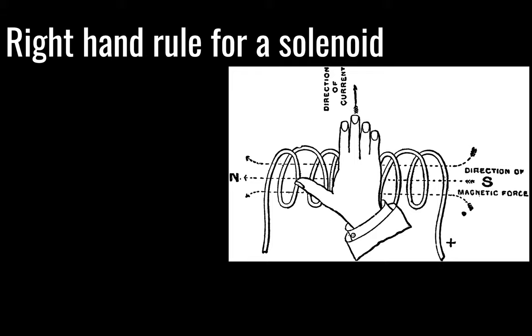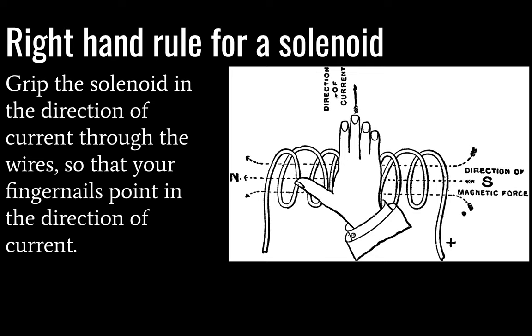For solenoids, similarly, we have a right-hand rule. So this is a very old picture that is, fortunately, copyright-free. So what you do is you grip the solenoid in the direction of current running through the wires. Here's a plus. So that means that our current is running toward the top of our photo here. And so we wrap our hand around the solenoid, and our thumb is then going to be pointing in the direction of the north pole.